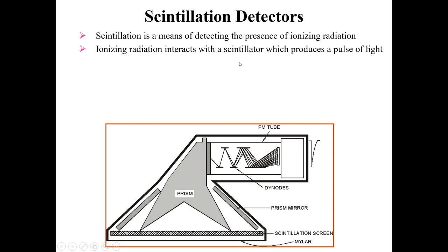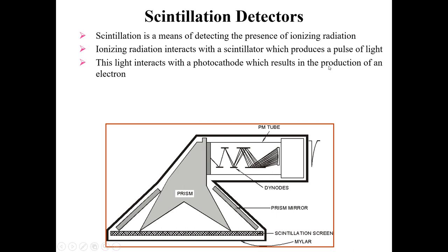When the ionizing radiation interacts with the scintillator, it produces a pulse of light. This initial light, produced by the interaction of ionizing radiations with the scintillator element or compound, then interacts with the photocathode.